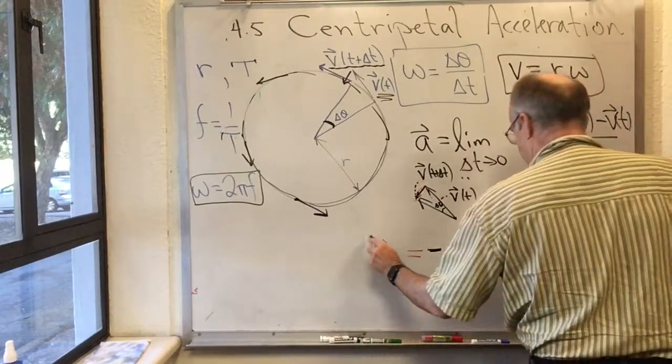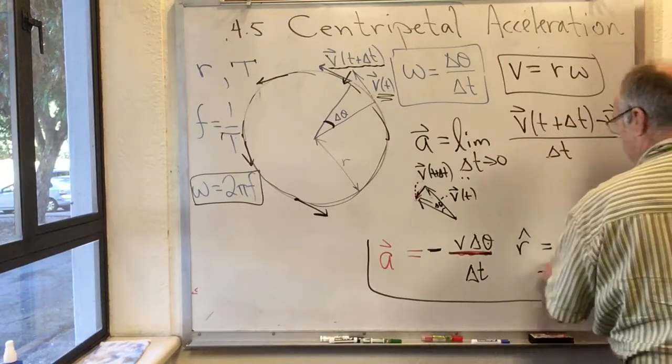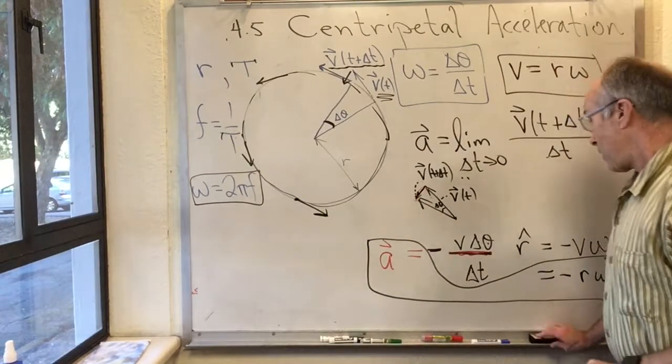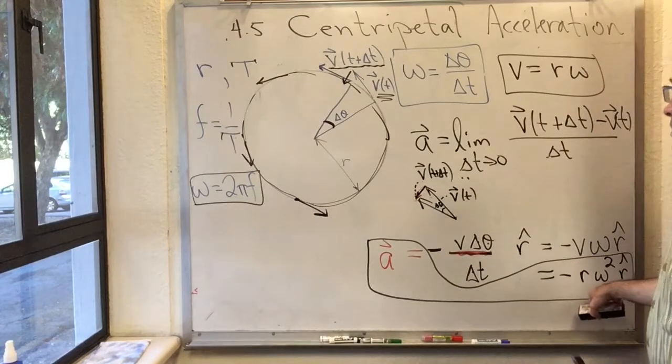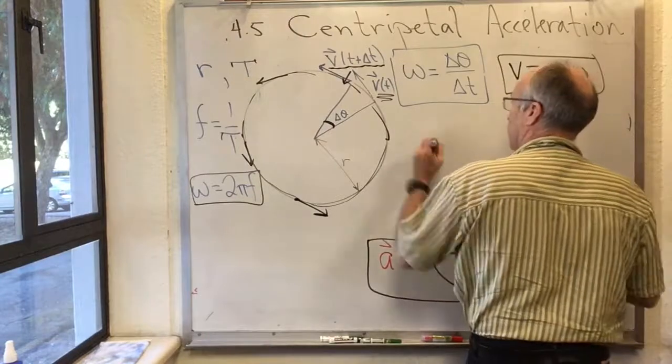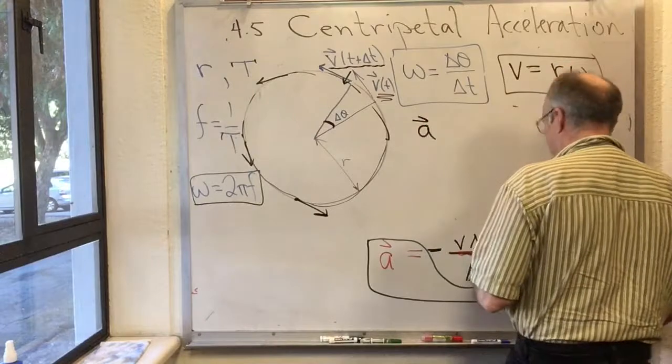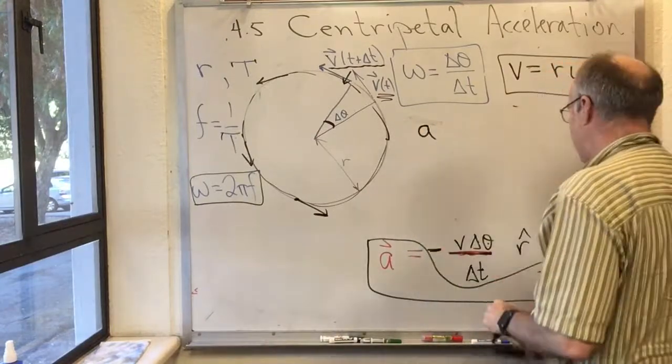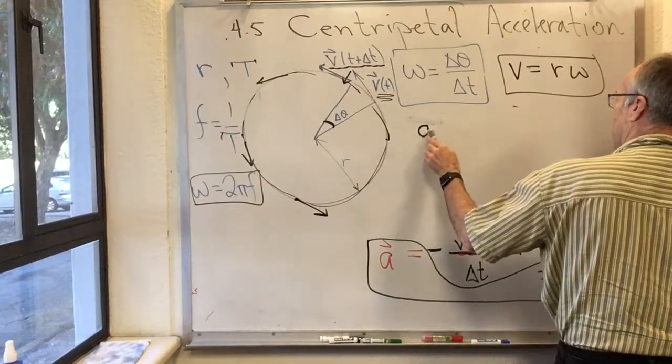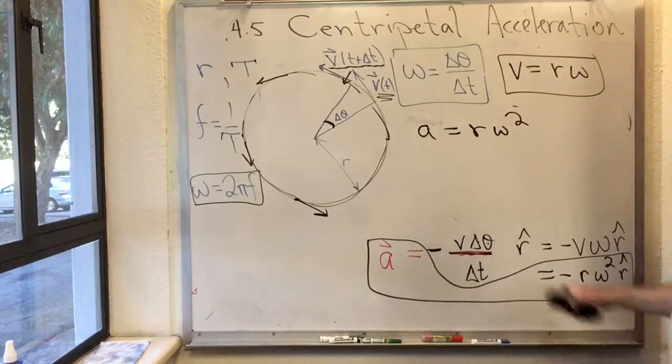So what have we got here? I'm going to box the final result. A is equal to minus r omega squared times r hat. Now, oftentimes you'll just see this written as the magnitude of the vector a, the magnitude of the vector a, which we'll just write as a with no arrow sign over it. So the magnitude of the acceleration, that's the size or the length of that vector, the magnitude of that vector is just r omega squared.